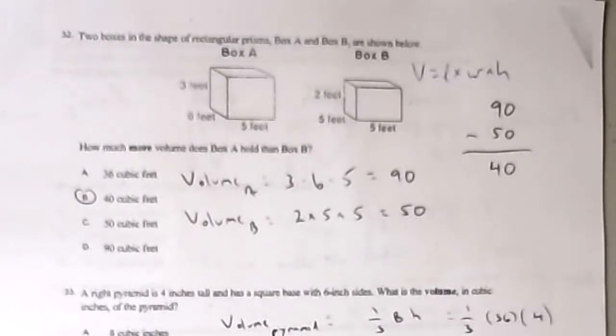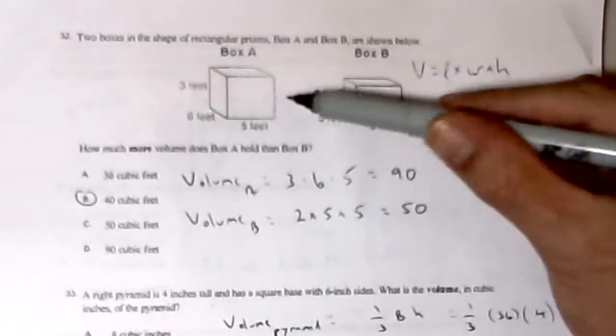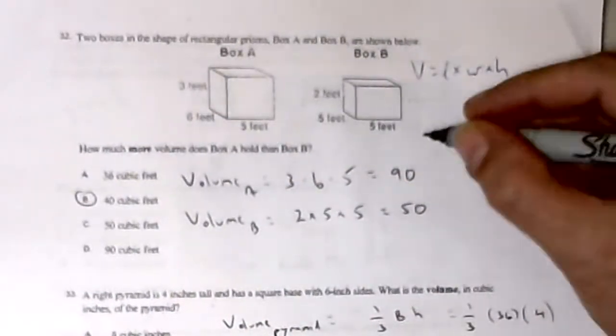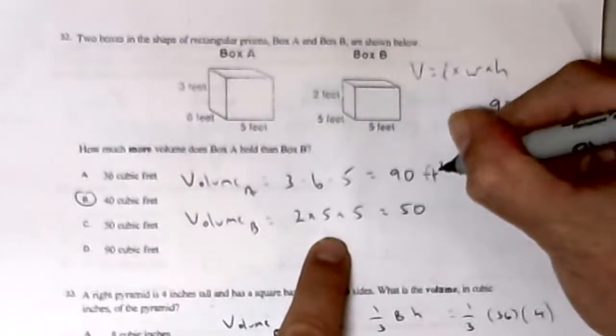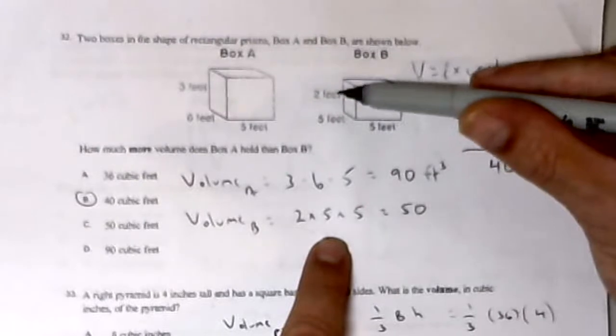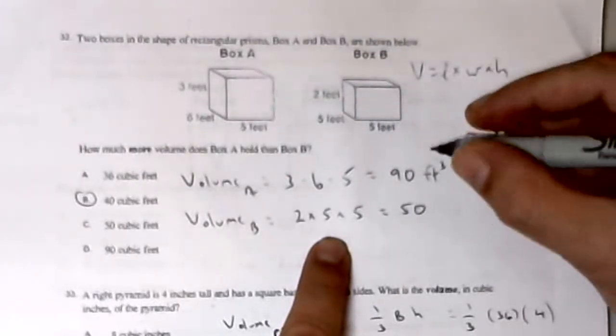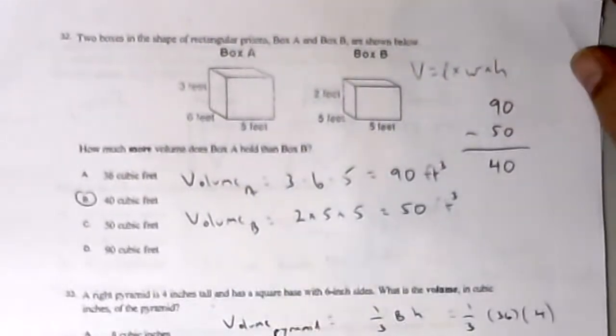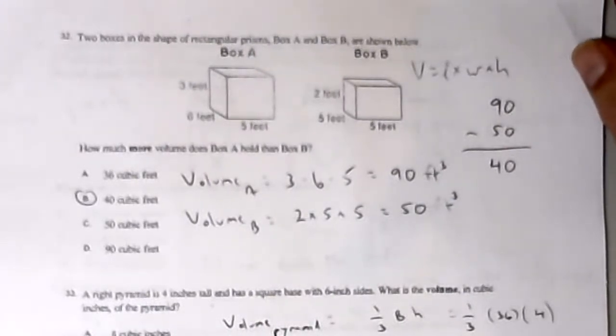So 5 times 6 times 3 is 90 cubic feet for box A, and then 5 times 5 times 2 is 50 cubic feet for box B. We subtract the difference to get 40 cubic feet.